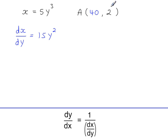To take the y-coordinate here, which is 2, and substitute that into here will not give you the gradient of the graph. The gradient of the graph is given by dy by dx, which is 1 over dx by dy, which is 1 over 15y squared.